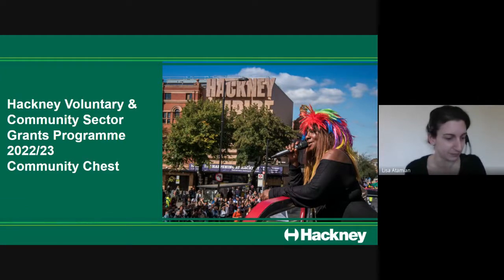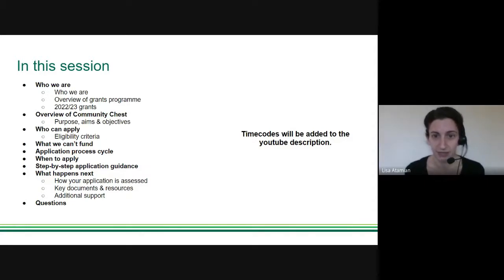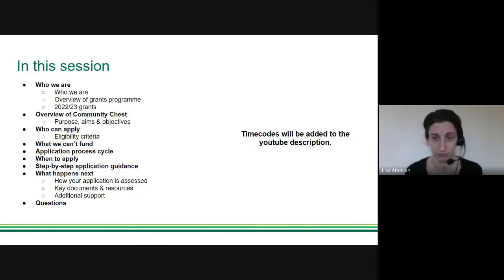The agenda for today covers an introduction to the team and program, an overview of the community chest grants including purpose, aims and objectives, and who can apply. We'll also cover eligibility criteria, what we can't fund, the application process cycle, when to apply, step-by-step application guidance, and what happens next including assessment and support. If there's time at the end we will take as many questions as possible. Please post any questions in the chat.